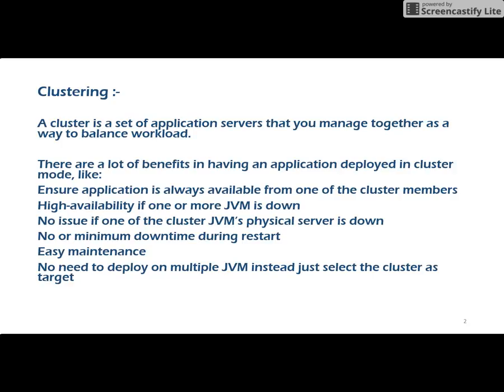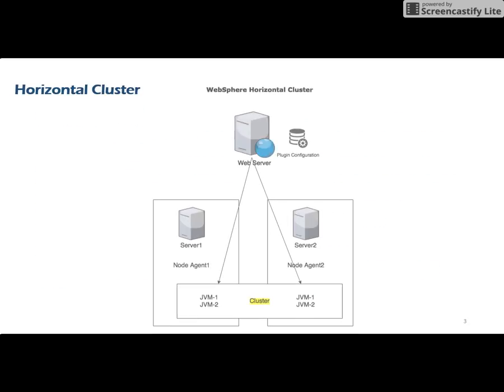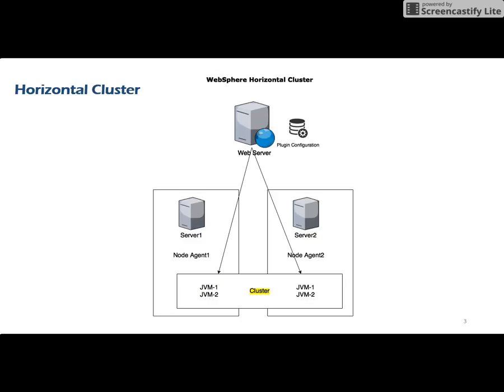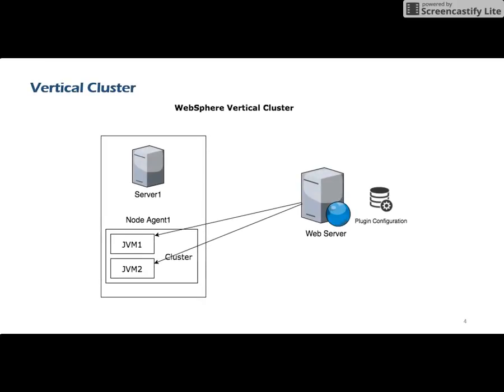There are two types of clustering available to scale your WebSphere application. The first is horizontal clustering, which is one of the widely used types where you host your application on multiple JVM servers using a single cluster. The next is vertical clustering, where all the JVM servers under the cluster reside on a single physical server.